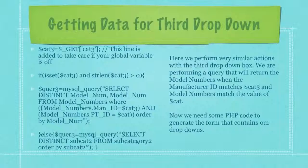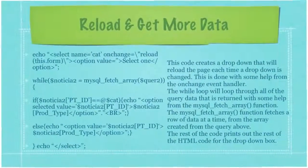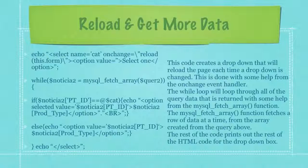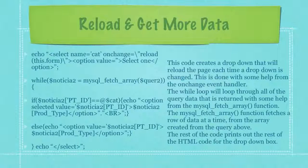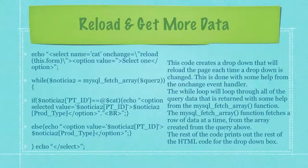Now we need some PHP code to generate the form that contains all of our drop-downs. This code creates a drop-down that will reload the page each time a drop-down is changed, done with some help from the onChange event handler. The while loop will loop through all the query data that is returned with some help from the mysql_fetch_array function. The mysql_fetch_array function fetches a row of data at a time from the array created from the query above. The rest of the code prints out the remaining HTML code for the drop-down box.